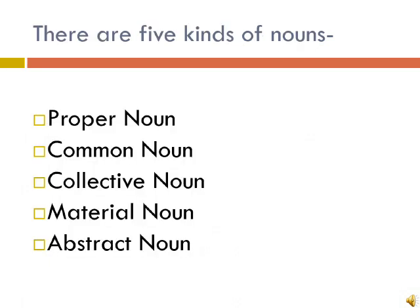Now we will revise the kinds of nouns. There are 5 kinds of nouns. First is proper noun, second is common noun, third is collective noun, fourth is material noun, and fifth is abstract noun.